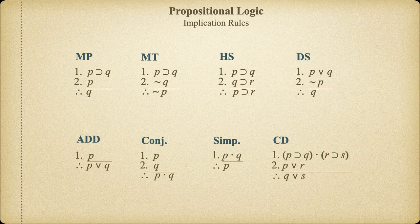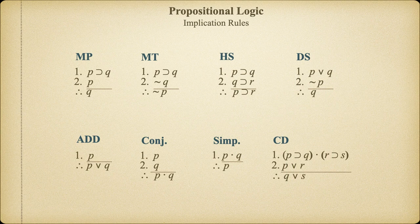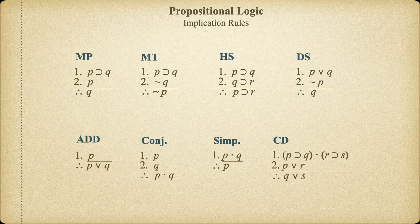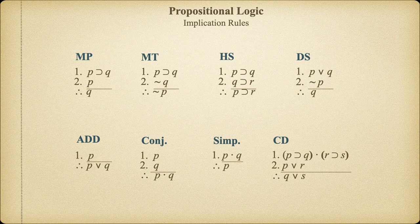So we now have eight valid argument forms that we can use to test ordinary language arguments for their validity instead of having to set up a truth table for each one. Again, the trick is to learn to spot the form of these eight simple arguments, keeping in mind that the universal variables that we're using here may appear much more complex than the actual arguments you analyze. But the form itself never changes. You're looking for the shape or the morphology of the argument.